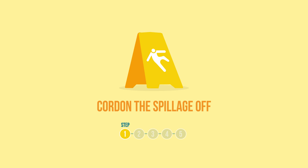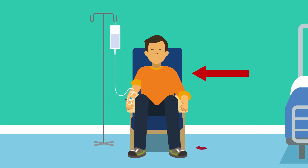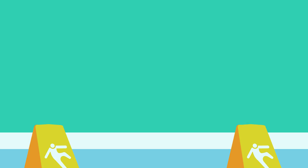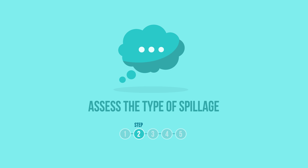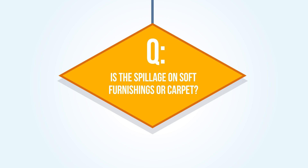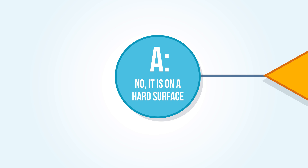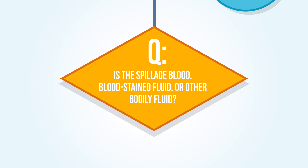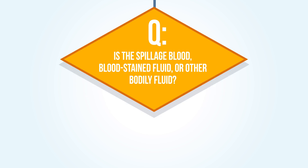Step 1: cordon the spillage off. Nuria carefully moves Brian in the chair and places wet floor notices around the spillage. Step 2: assess the type of spillage. Nuria goes over to the sluice area, consults the algorithm which is on the wall, and assesses the spillage by asking the following questions. Is the spillage on soft furnishings or carpet? No, it is on a hard surface. Is the spillage blood, bloodstained fluid or other bodily fluids? Yes.